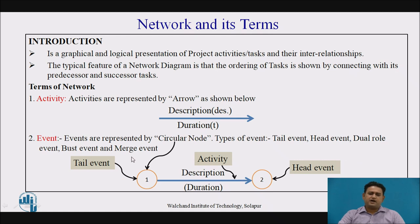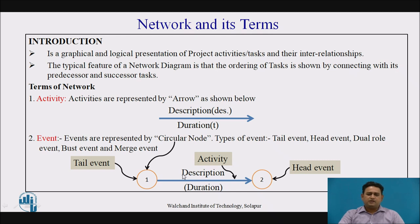Now, events are the parts in the network diagram which are presented at the start and the end of a particular activity. The event does not consume any resource or time. Here, we observe that a particular event is represented by a circular node. Here, 1 and 2 are the particular circular nodes which are the events of the activity. Node 1 is at the tail of the activity, so it is known as a tail event. Node 2 is at the head of the arrow, so it is known as a head event.